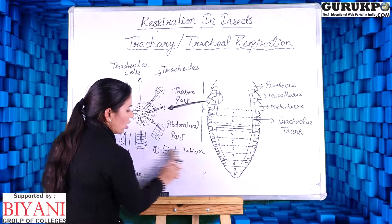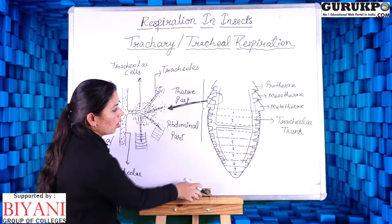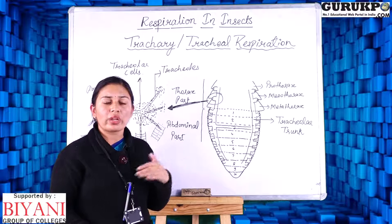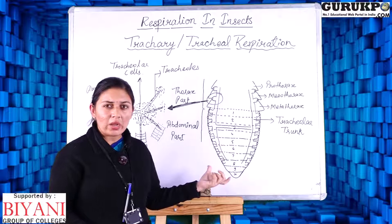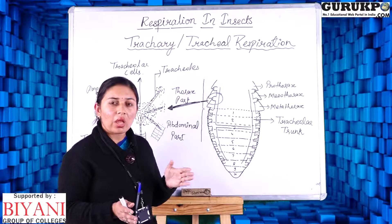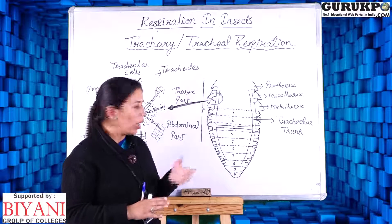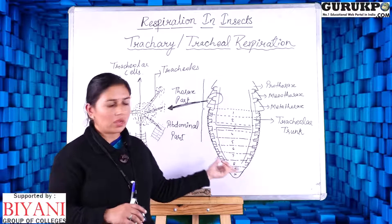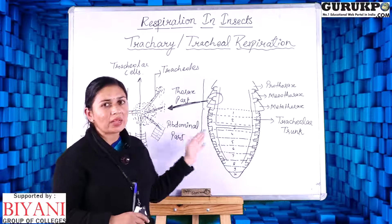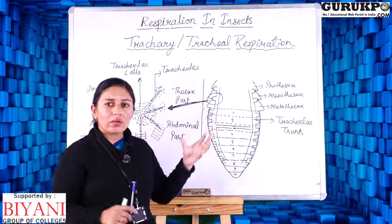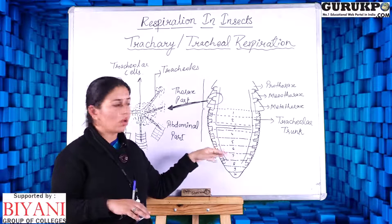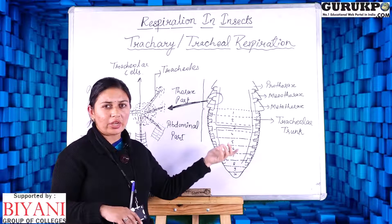The next process occurs when the spiracles get closed. This active inhalation-exhalation process occurs when the animal is moving or flying, with all spiracles open and tergosternal muscles alternately relaxing and contracting. However, when the insect is in a relaxing or resting position, the spiracles get closed and air coming from the environment is completely blocked — it cannot reach the ampulla, tracheary tubes, or cells.